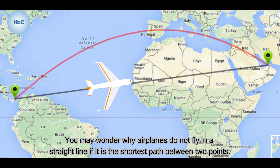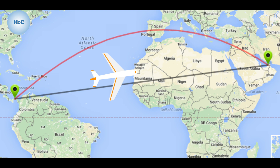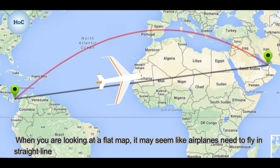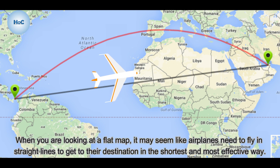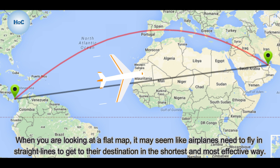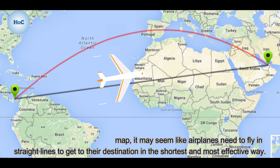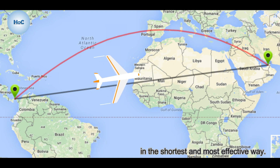You may wonder why airplanes do not fly in a straight line if it is the shortest path between two points. When you are looking at a flat map, it may seem like airplanes need to fly in straight lines to get to their destination in the shortest and most effective ways.